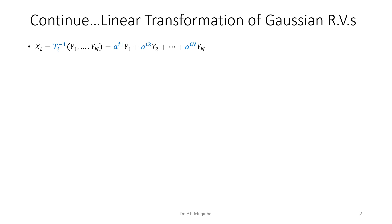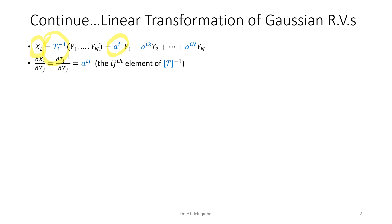To continue with linear transformation of Gaussian random variables, we can write X in terms of the inverse of T, finding all variables using the inverse transformation. Using blue color for the inverse transformation entries — A11, A12, and so on, written with superscripts to distinguish them. If you differentiate the linear equation with respect to Y1, you get the first entry; differentiate with respect to Y2, you get the second, and so on. These entries in blue are the entries of the inverse transformation matrix.